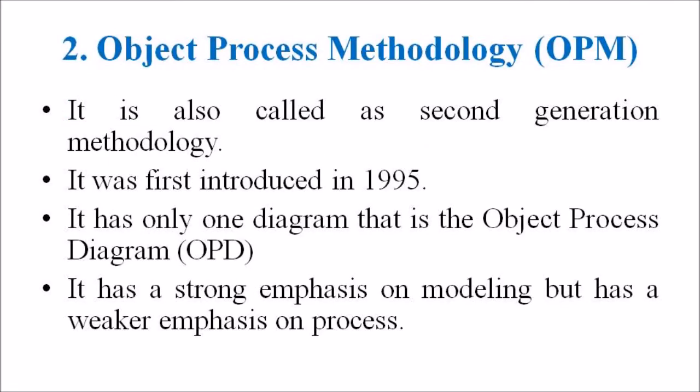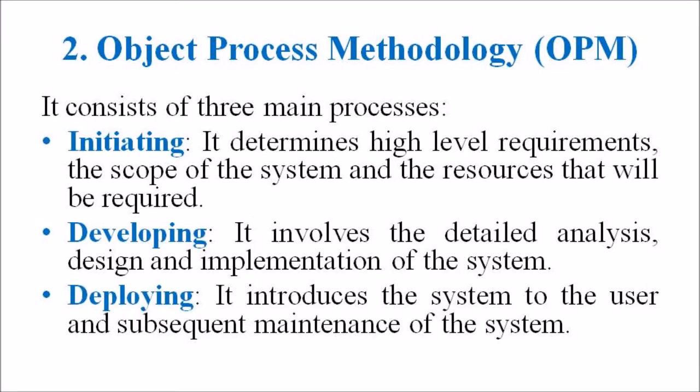The second type is OPM, that is Object Process Methodology, also called a second-generation methodology, which was first introduced in 1995. It has only one diagram — the Object Process Diagram (OPD) — used for modeling the structure, function, and behavior of the system. It has a strong emphasis on modeling but a weaker emphasis on processes. It contains three main processes: initiating, developing, and deploying. In the initiating phase, it determines high-level requirements, the scope of the system, and the resources required. The developing phase involves detailed analysis, design, and implementation. The deploying phase introduces the system to the user and handles subsequent maintenance.